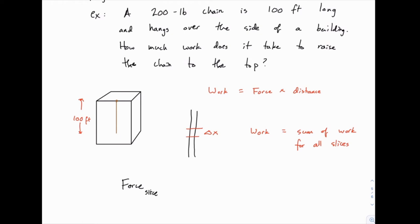If for instance our slice was one foot long, you should be able to tell pretty easily that that would be two pounds. If it was two feet long, it would be four pounds. Notice what we're doing is we're multiplying the length of the chain, at least the segment we're looking at, by a unit weight. So that's going to be the unit weight times the length.